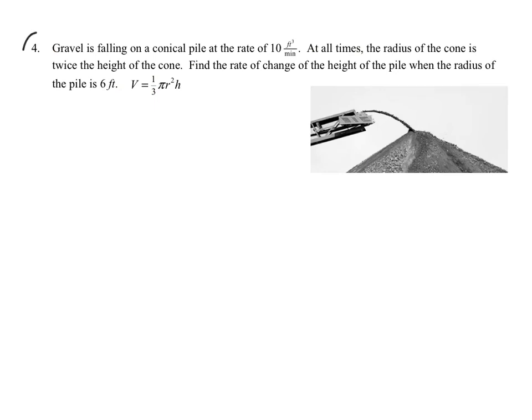Moving on to number four. We have gravel. Gravel is falling on a conical pile at a rate of 10 cubic feet per minute. At all times, the radius of the cone is twice the height of the cone. This is really nice information for us because this helps us eliminate some of the variables. So we want to find the rate of the height of the pile when the radius of the pile is six feet. Here is the equation for the cone. If they give you some geometrical figure that's a little bit odd, they will give you the formula for the volume. Sometimes you might have to find it, but a lot of times, like I said, if it's an odd one, they'll give it to you.